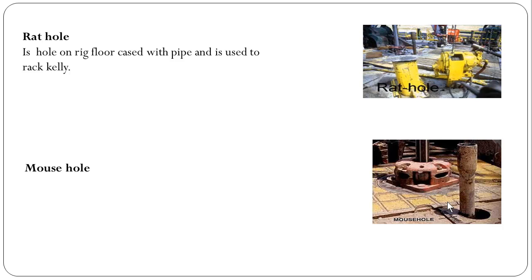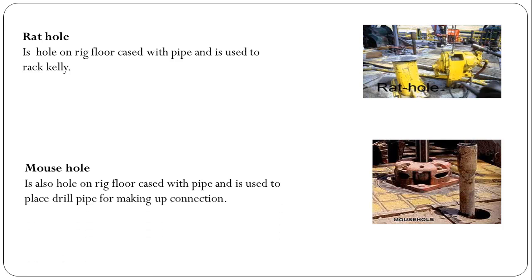Rat hole is a hole on the rig floor cased with pipe and is used to rack the kelly. Mouse hole is also a hole on the rig floor cased with pipe and is used to place a drill pipe joint for making up a connection. This hole is called the mouse hole, in which we keep the drill pipe joint ready for making up the connection with the drill string after the kelly is pulled down.